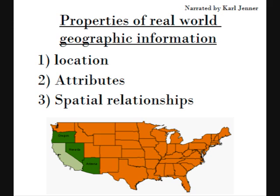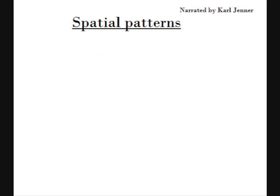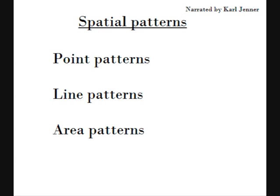Now that we understand the properties of real world geographic information, we can begin to understand the process we go through when we identify geographic objects such as the states on this map. We will now look at spatial patterns. A spatial pattern is an arrangement of information in terms of physical space. Most spatial patterns you will see will show a top-down view of land, with points, lines and areas representing people, places and environments on Earth's surface. Spatial patterns are normally illustrated using one of three patterns: point patterns, line patterns and area patterns.